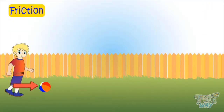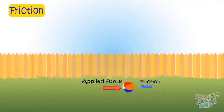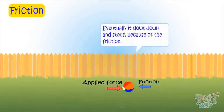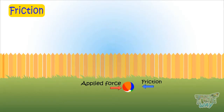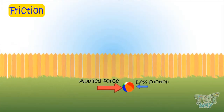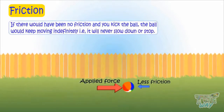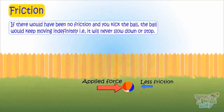Here we have a ball. Kick it and it will start moving, but eventually it slows down and stops. It is because of friction — the opposing force which is always there. If there were no friction and you kicked the ball, the ball would keep moving indefinitely. That is, it will never slow down or stop.